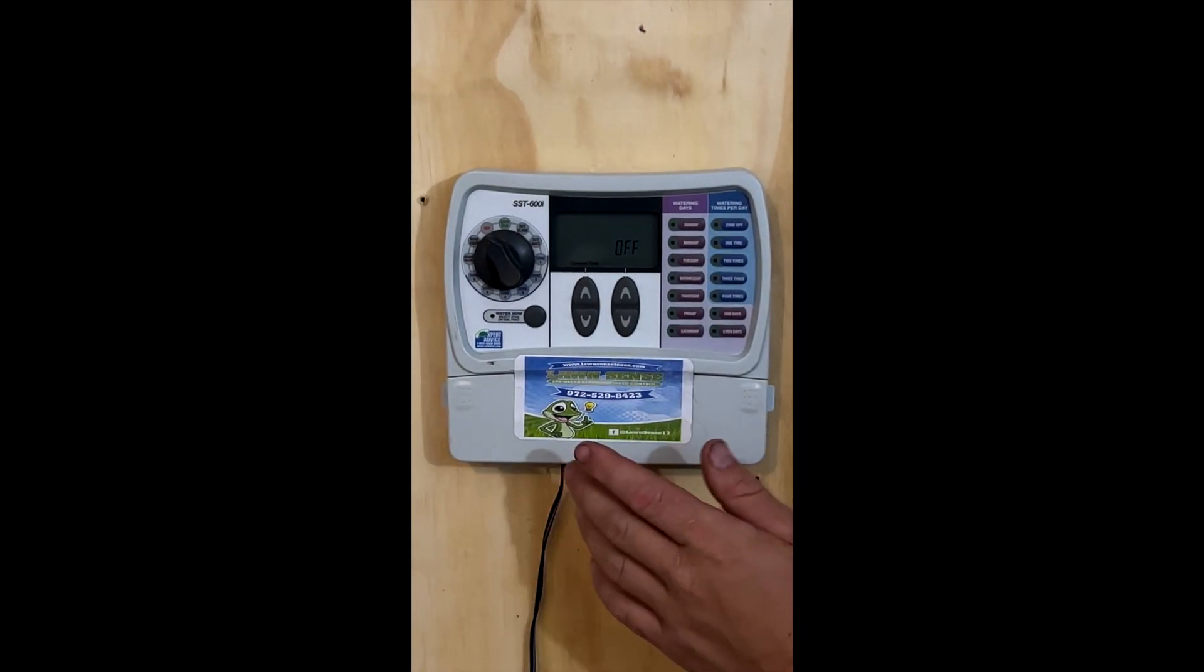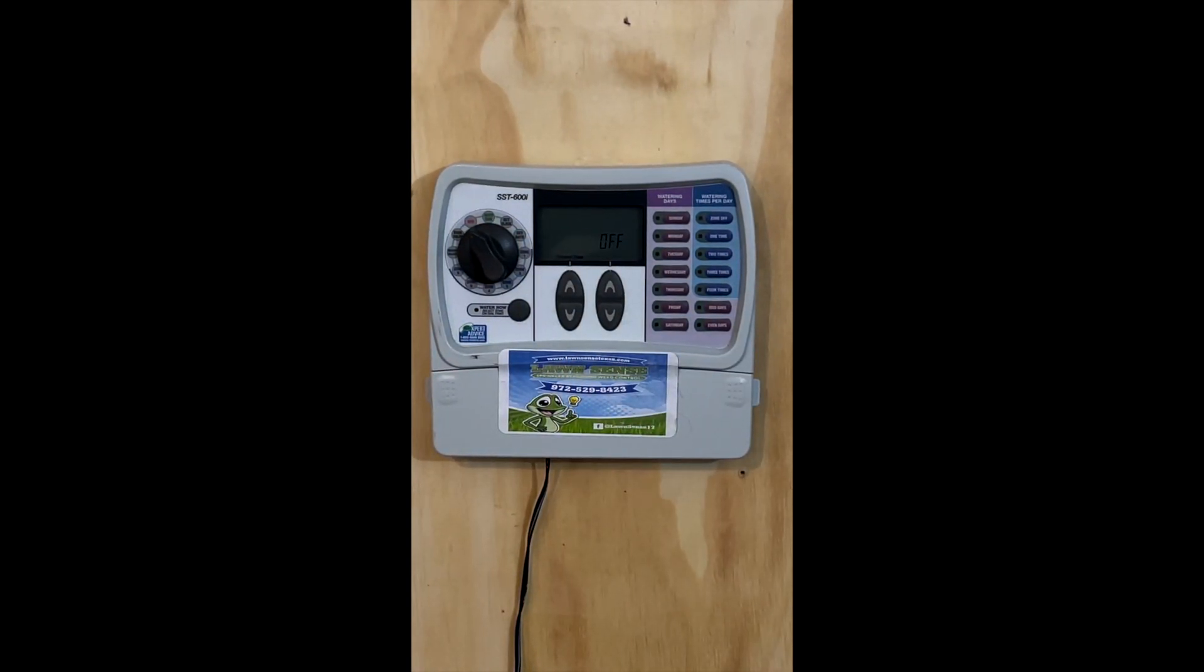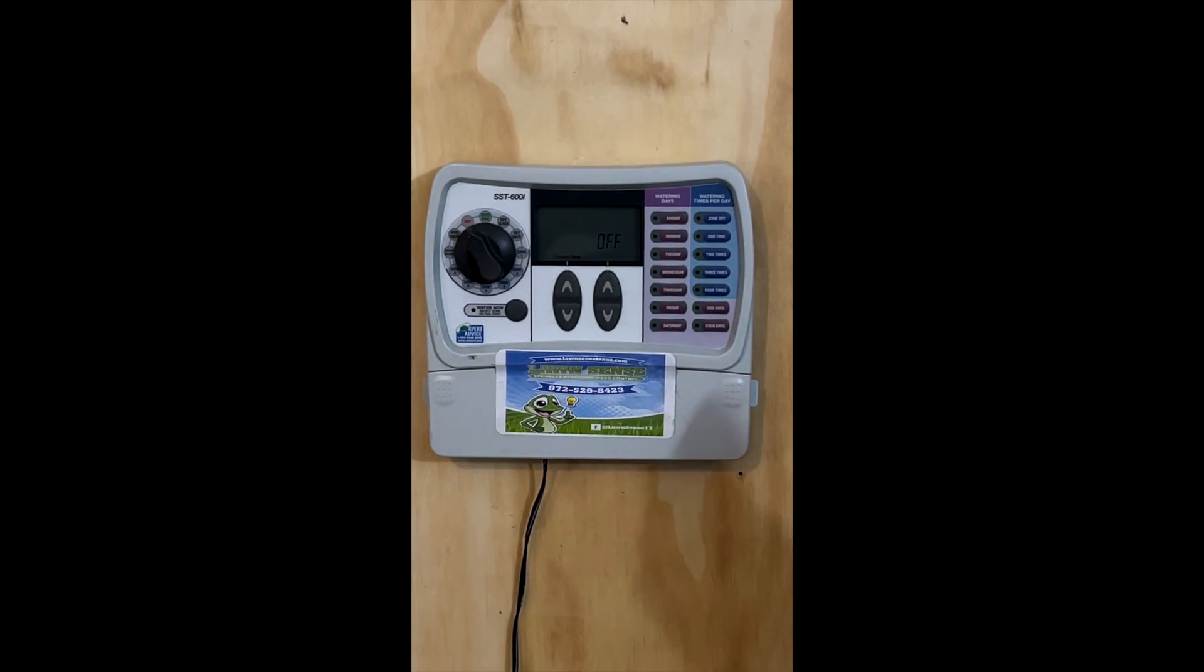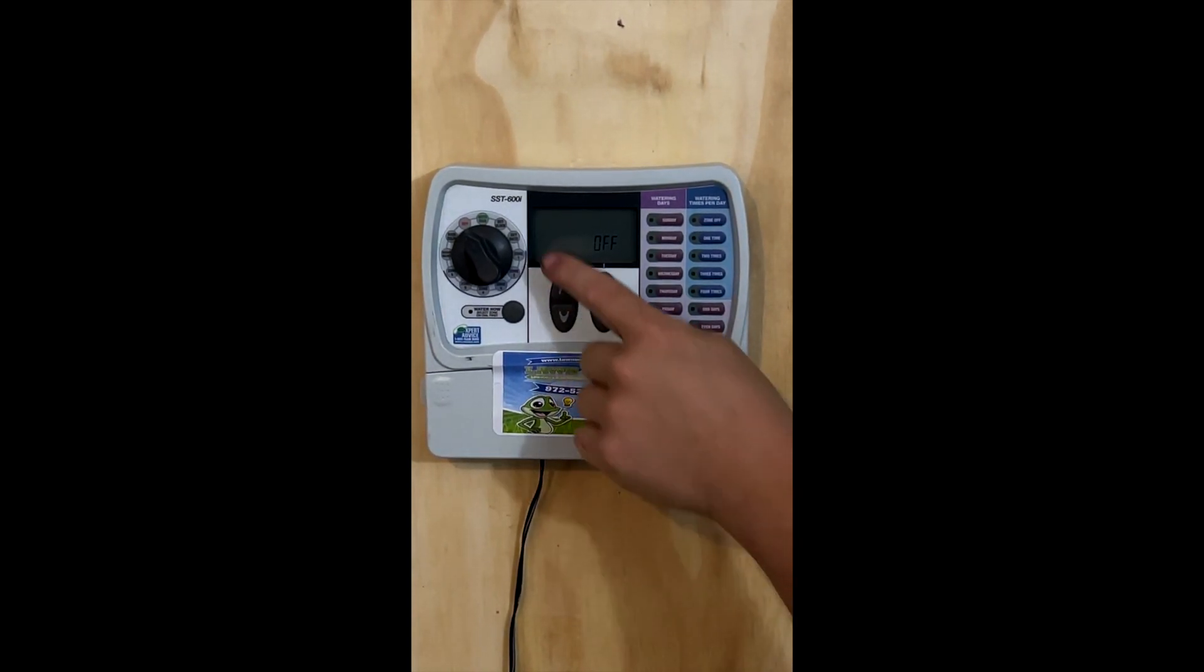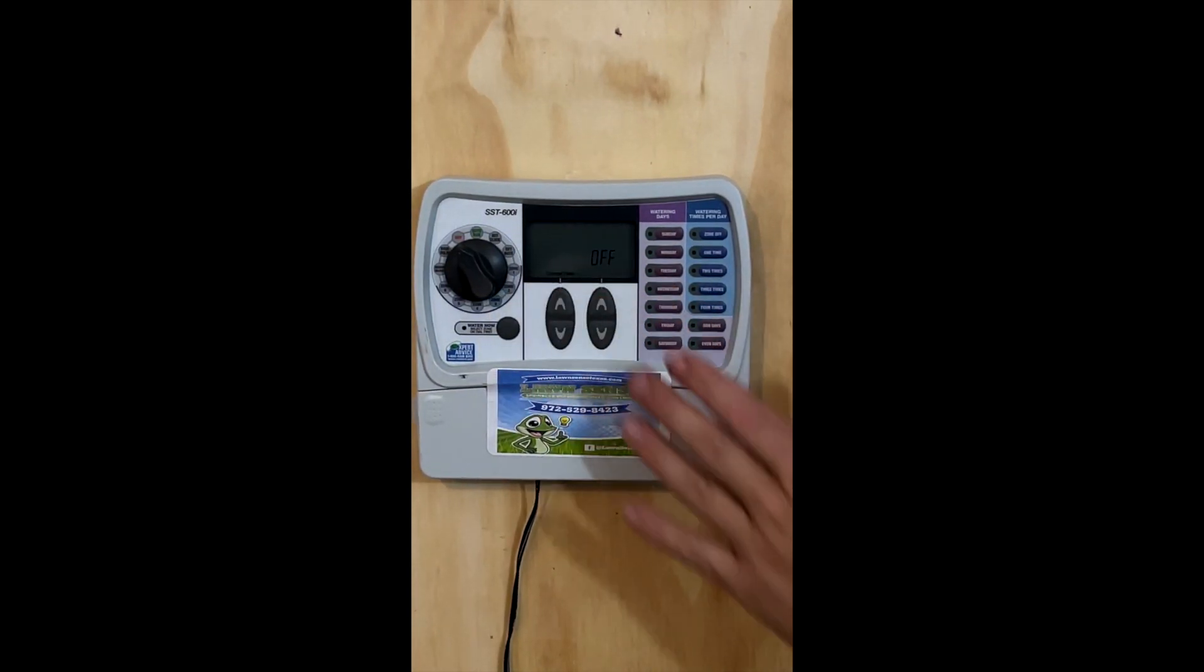You'll notice right here, this is the 600i variant. This number right here is going to correspond with how many stations your controller will accept. So this specific model is a six station model. This is where you get the 600i. This one can be offered all the way up to 1200i.